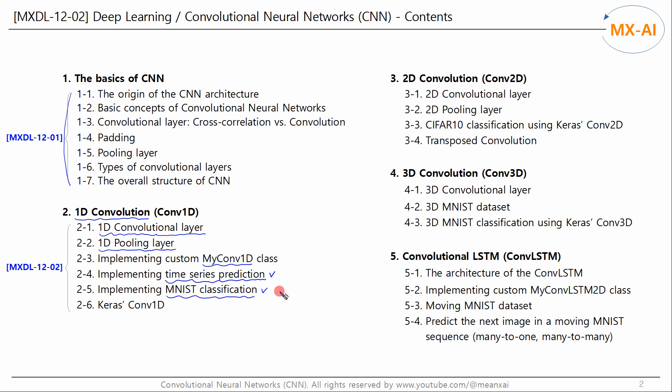The final component of a CNN model, the feedforward network, performs regression or classification. Finally, we will also classify MNIST images using the Keras 1D convolution class.